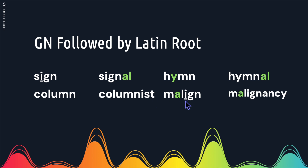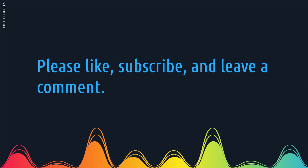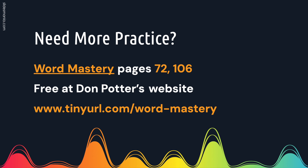Here we have a word that looks like align from a previous screen but we've just added an M, so it's malign. But when we add some suffixes it becomes malignancy where the N sound is clear. If you find this useful please like and subscribe and leave a comment. If you need more practice you can download Word Mastery and work on those pages.